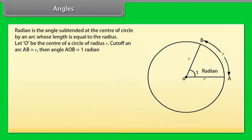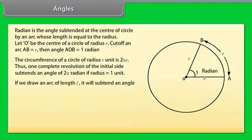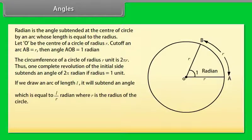How to measure the radian? Radian is the angle subtended at the center of a circle by an arc whose length is equal to the radius. Let O be the center of a circle of radius R. Cut off an arc AB equal to R. Then angle AOB equals 1 radian. The circumference of a circle of radius R is 2πR. One complete revolution sustains an angle of 2π radians if radius equals 1 unit. If we draw an arc of length L, it subtends an angle equal to L/R radians, where R is the radius, and we can write L = R·θ.